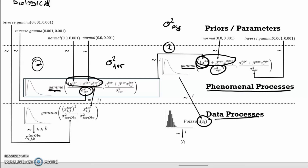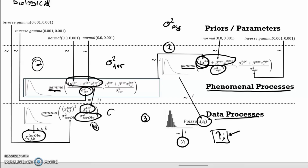Moving now to the data processes: the third submodel says that the observed number of offspring arise as random draws from a Poisson distribution with lambda_i as the parameter. With the Poisson distribution there's only a single parameter, lambda, which is equal to both the mean and the variance.